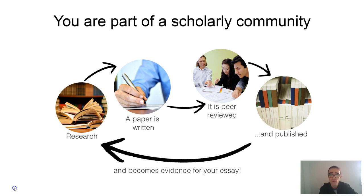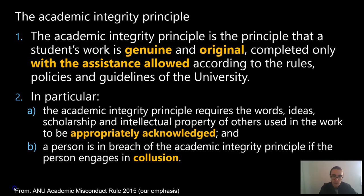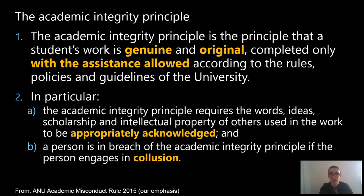Within that community, it is very important to abide by the principles of academic integrity. This means acting with integrity in our research and writing — producing our own work, not collaborating with others where it isn't allowed, not recycling old assignments, not plagiarizing, and always acknowledging our sources. Two key components are that a student's work must always be genuine and original, and completed only with permitted assistance. The academic integrity principle requires the words, ideas, scholarship, and intellectual property of others to always be appropriately acknowledged. A person is in breach of this principle if they plagiarize or engage in collusion.